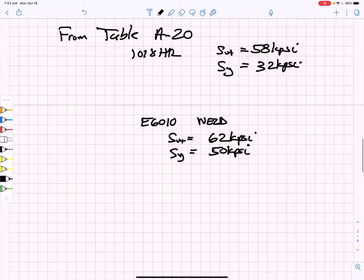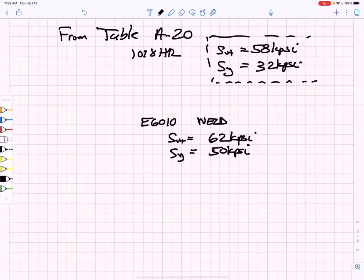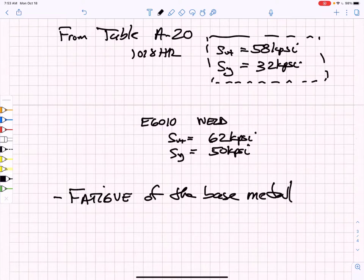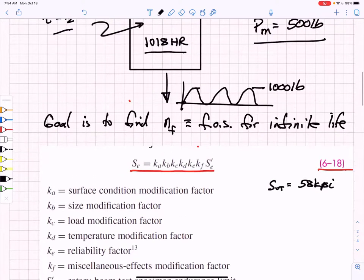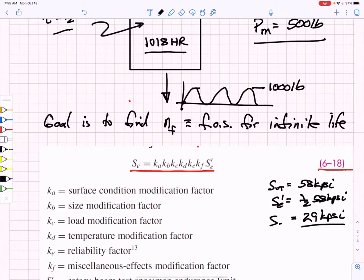We're going to cast our fatigue problem in terms of the weaker material. So we're going to end up using the base metal for all of our fatigue calculations. We're going to use the ultimate strength of the 1018, 58 kpsi. Our first estimate of the endurance strength, SE prime, is going to be half of that, 29 kpsi.